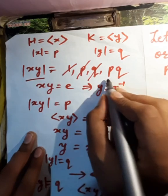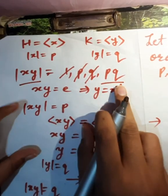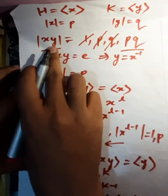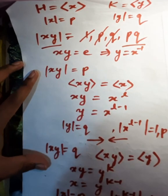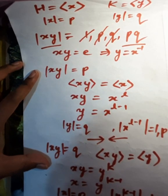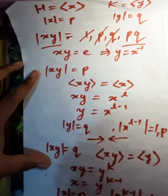Hence, the only order of xy is pq, which is the order of the group. Thus, xy generates all of the group. Hence, we get G equals the subgroup generated by xy, which implies G is cyclic.